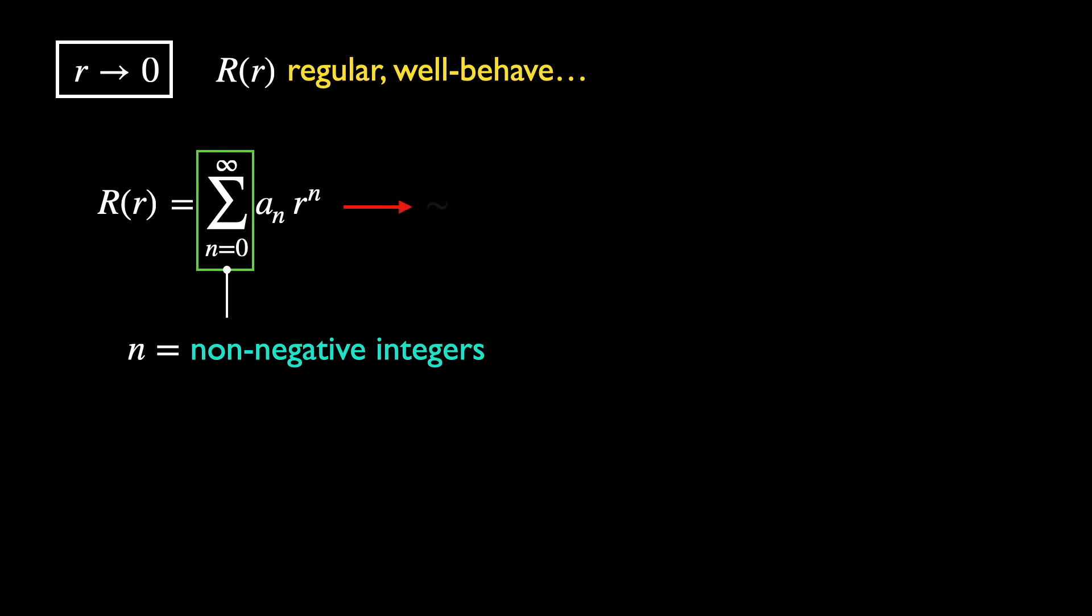And the key point to note is that this is a sum of powers of non-negative integers. Therefore, as r goes to 0, the most dominant term in this series is the one with the lowest power of r. The rest of the terms may be dropped in this limit.